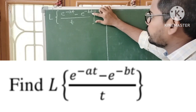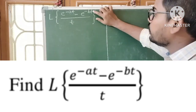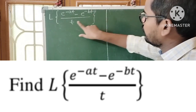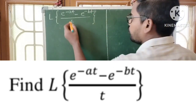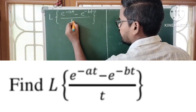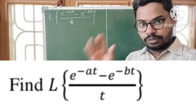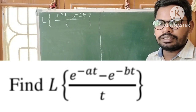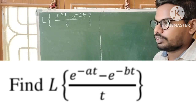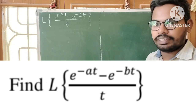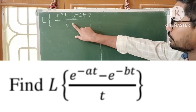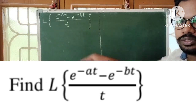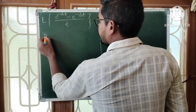If you observe the numerator and denominator: in the numerator we have e^(-at) minus e^(-bt), and in the denominator we have only t. Since the denominator contains only t, we can apply the division by t theorem.